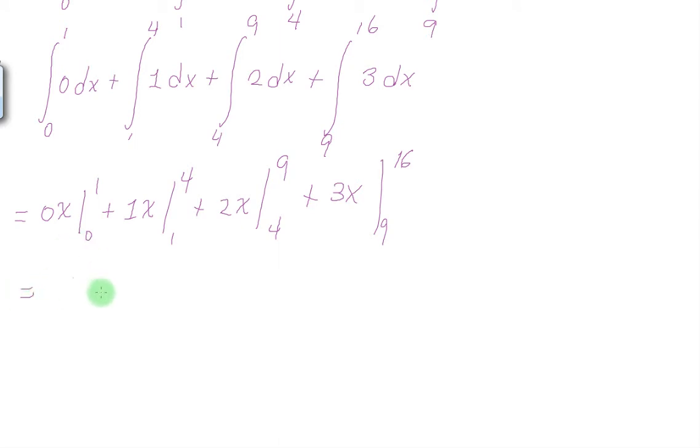This is equal to 0 plus 4 minus 1 plus 2 times 9 minus 4 plus 3 times 16 minus 9. This is equal to 3 plus 2 times 5 plus 3 times 7. So this is equal to 3 plus 10 plus 21 which is 34.